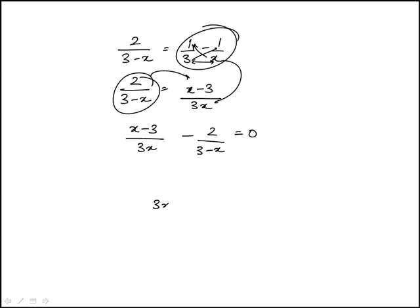So now I'm going to merge these terms. Denominator is 3x times 3 minus x, and then x minus 3 times 3 minus x minus 6x, and then do the expansion in the numerator.